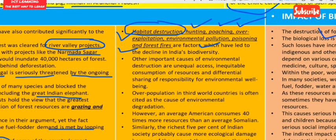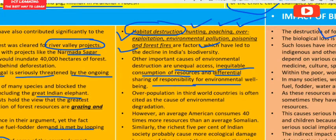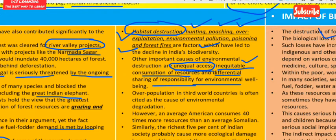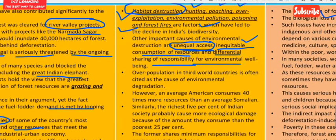Other important causes of environmental destruction are unequal access to resources, inequitable consumption, and differential sharing of responsibility for environmental well-being. Not all people have the same assets — the rich consume far more resources than the poor — which makes consumption inequitable and responsibility differential. Overpopulation in third world countries is also cited as a cause of environmental degradation.